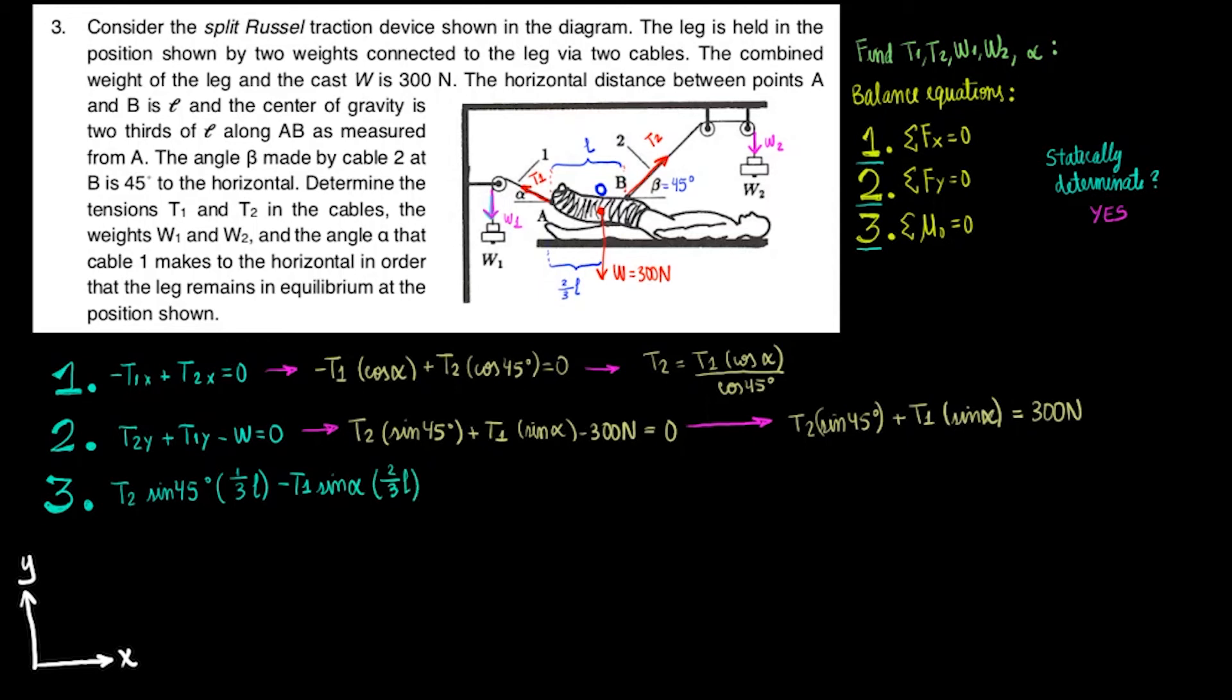We ignore the horizontal components because their line of actions go through O. That's all equal to zero. Notice my choice for positive and negative moments depending on how the forces affect point zero. You can decide to flip the signs and still get the same answers.